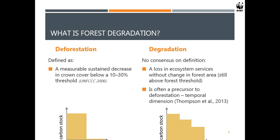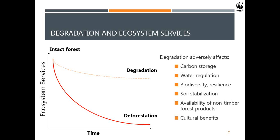Degradation, on the other hand, doesn't really have a single definition. There are many definitions and no one has agreed upon them — every country has its own. In general, the definition includes a loss of ecosystem services while still having no change in forest area. So a forest can still technically remain forest but may have a lower delivery of ecosystem services when degraded. Often this is a precursor to deforestation, with an incremental decrease in biomass.